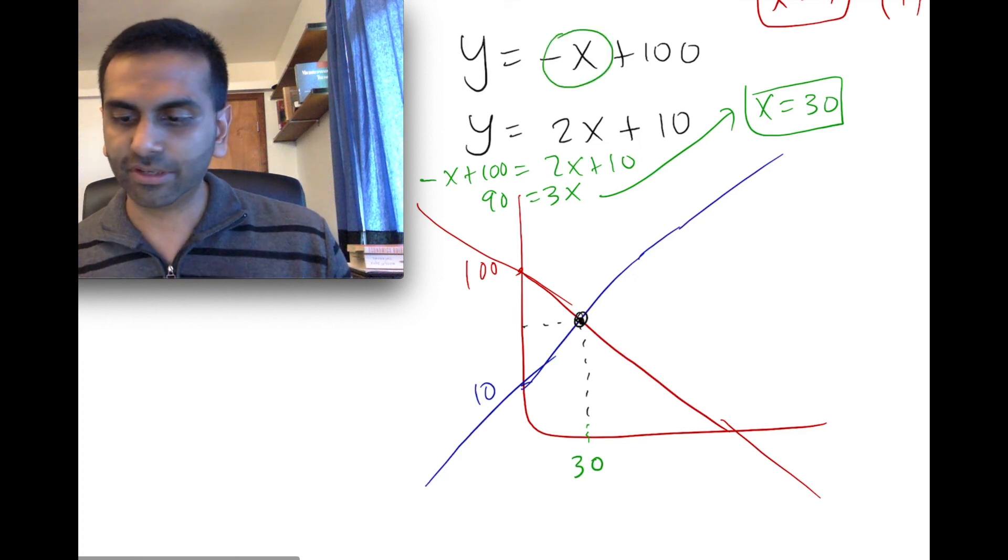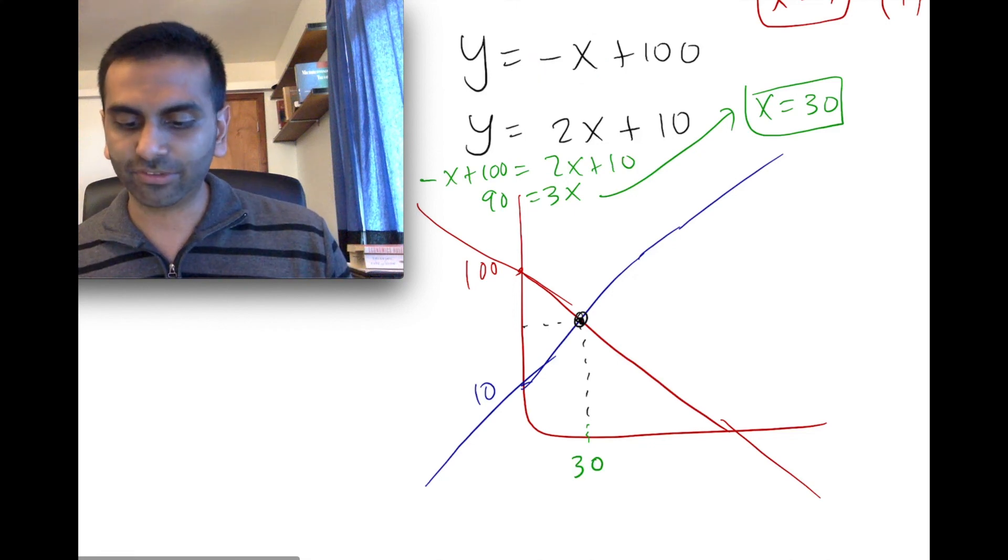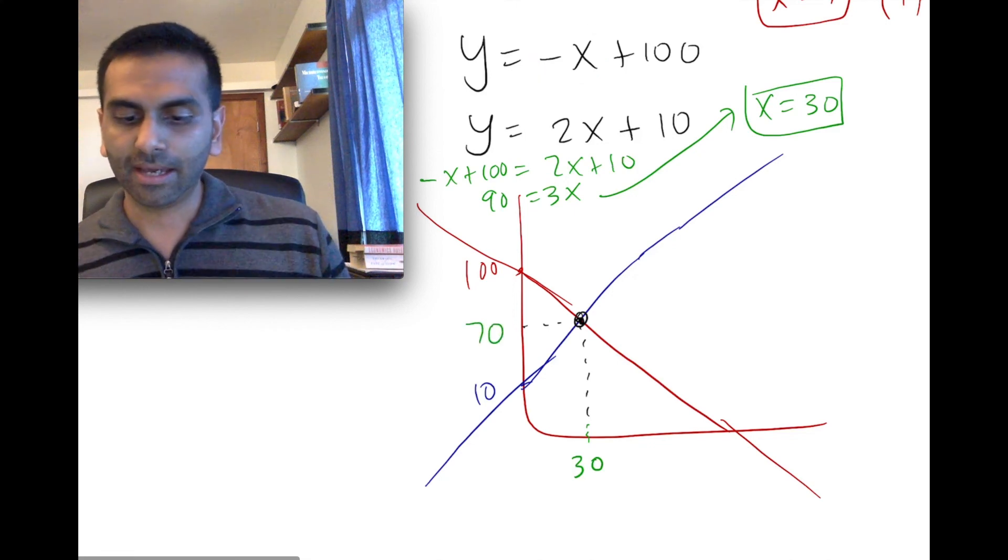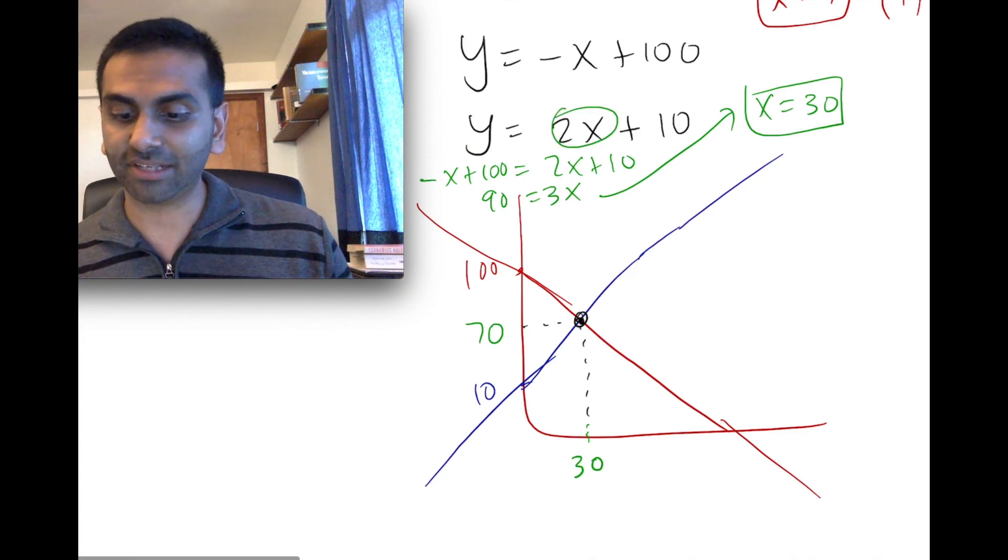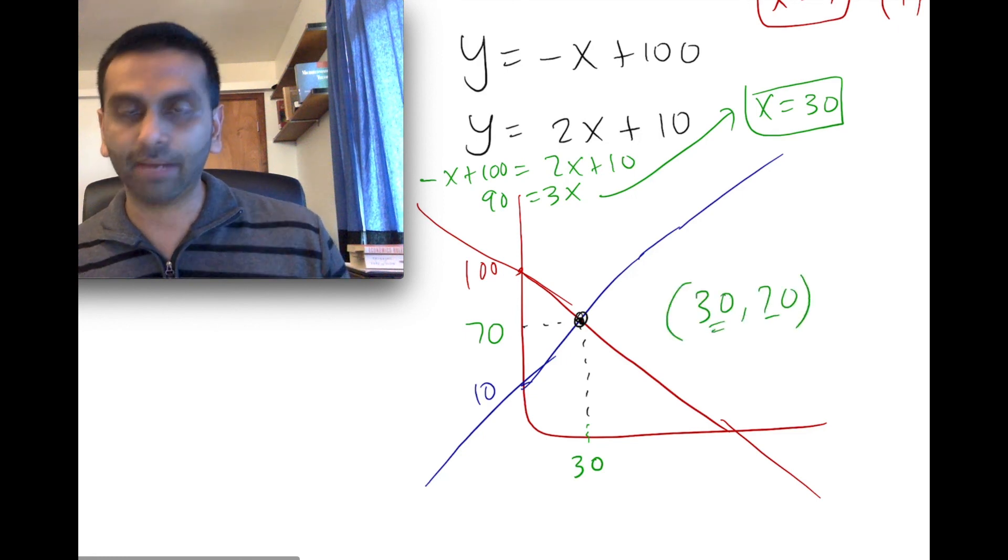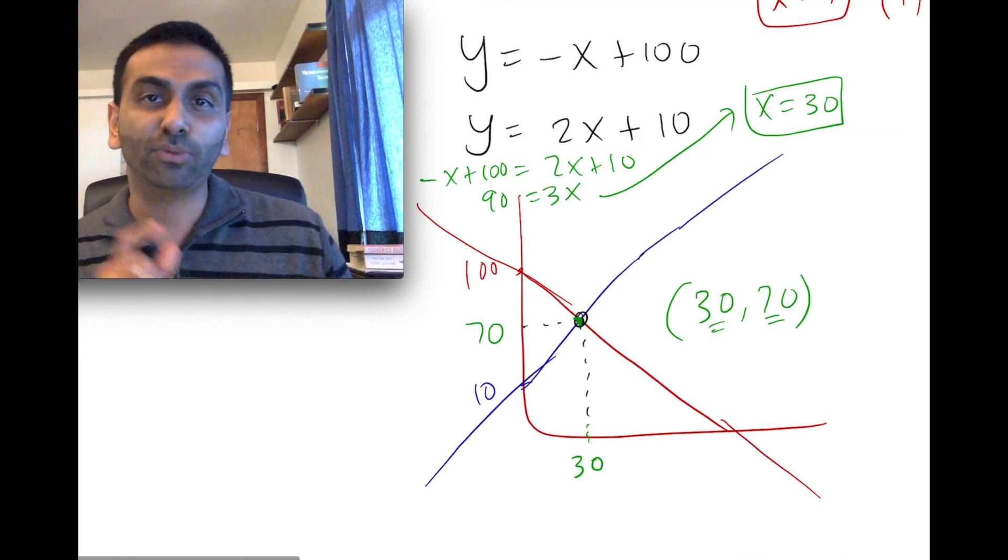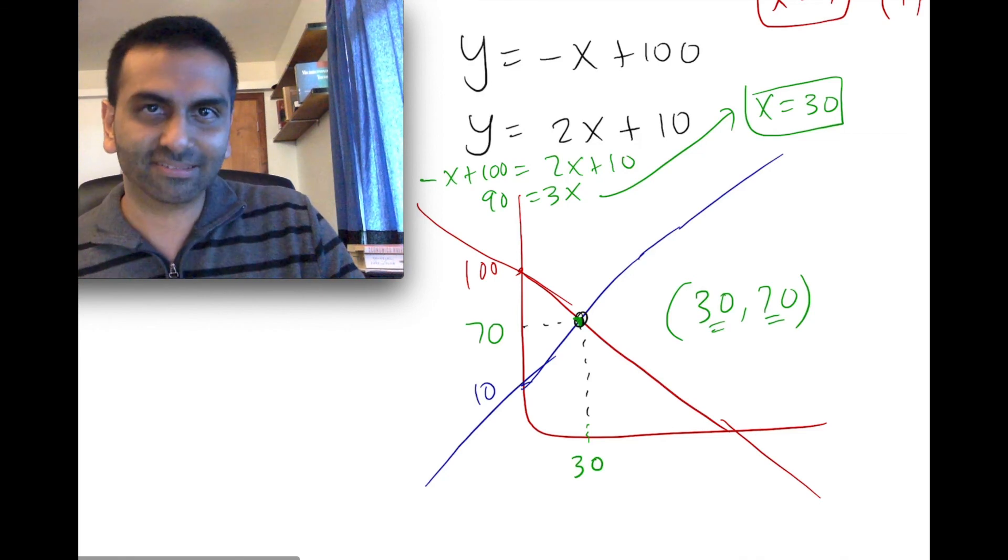Here, if you plug in x equals 30, that's going to be -30 + 100, which is 70. And if you were to plug it in here, 2 times 30, which is 60 + 10, that's also 70. Okay, good. So 30, 70, that point, when x is 30, y is 70 on both those lines. That's the only one point they share in common. And that's why that's the solution to that system of equations.